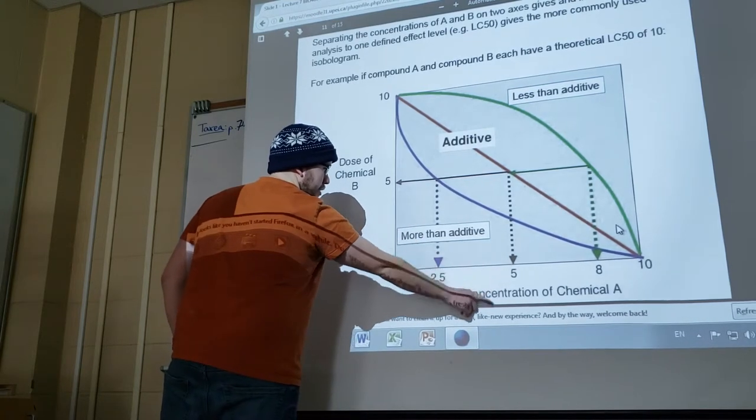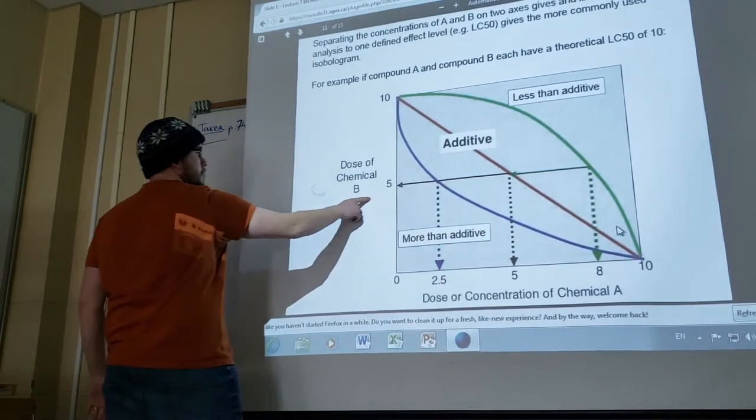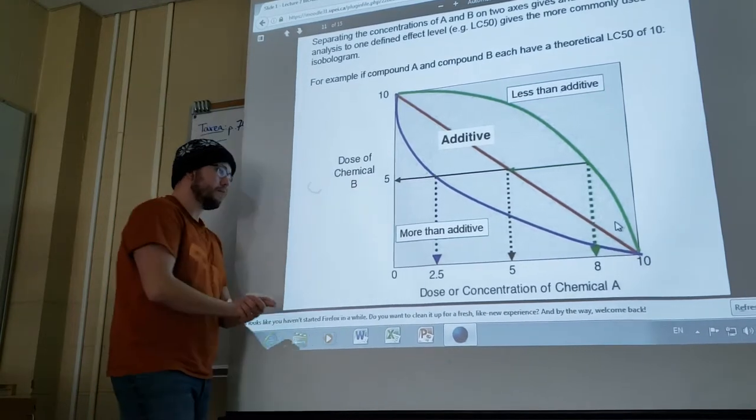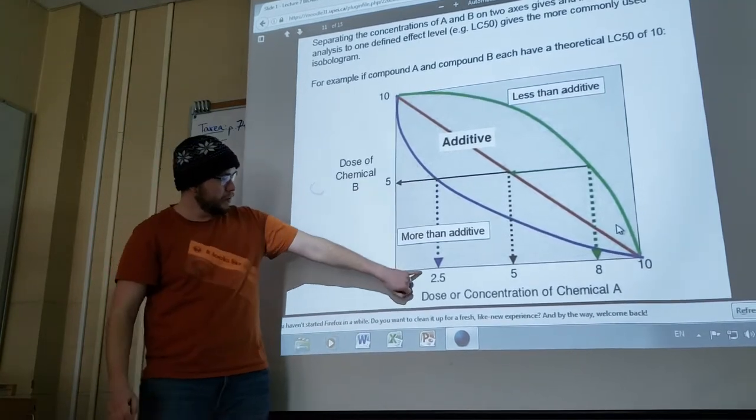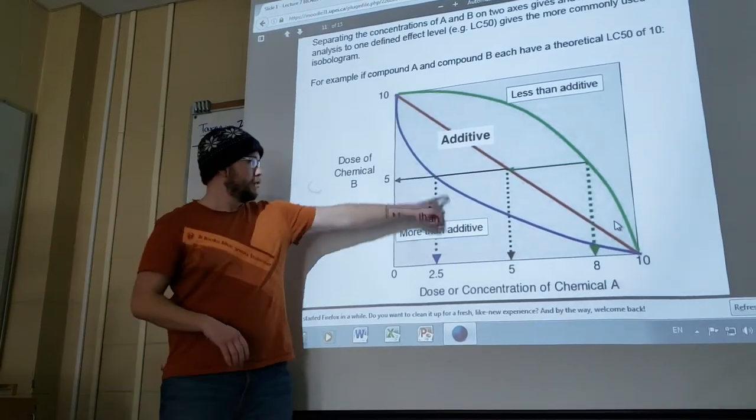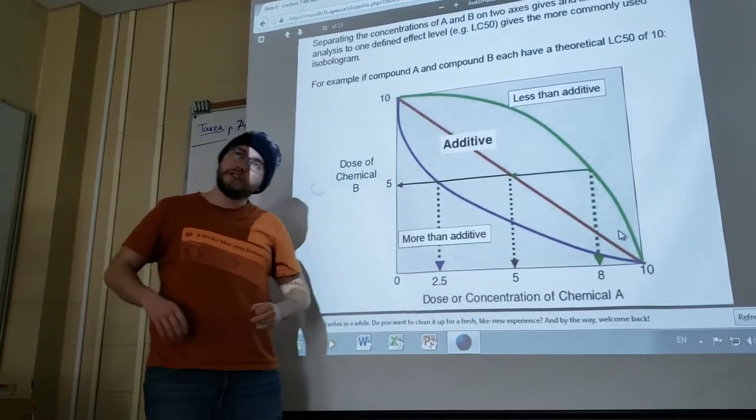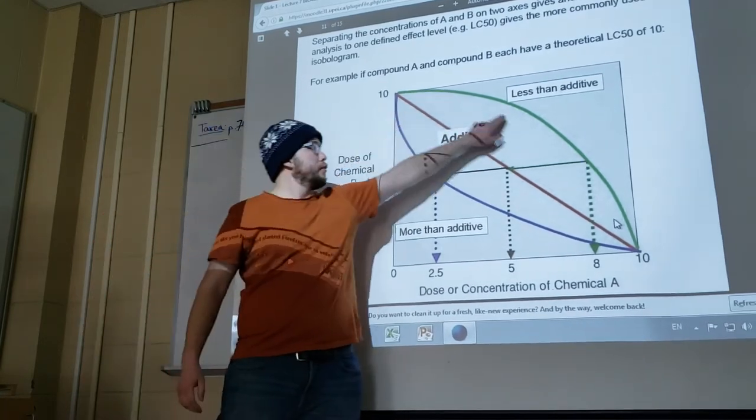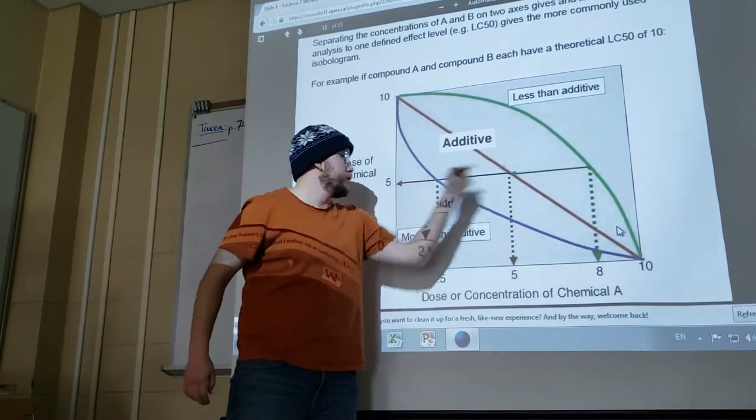In a more than additive system, 2.5 accounts for 5, so it would be on this curve here, the more than additive curve. The less than additive curve is that of the top where 8 accounts for 5.